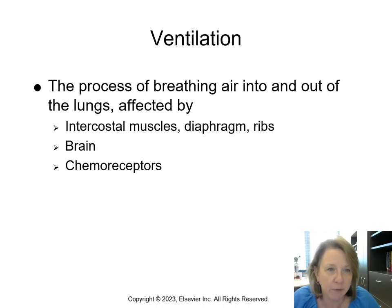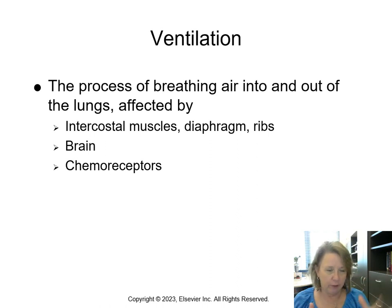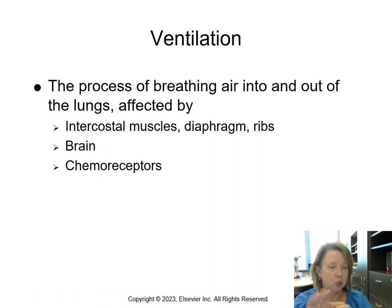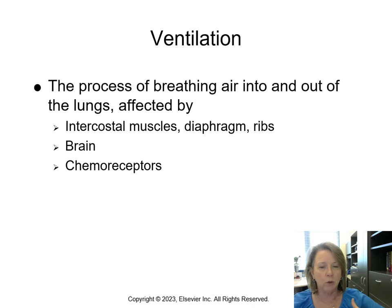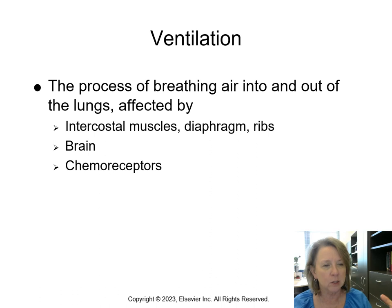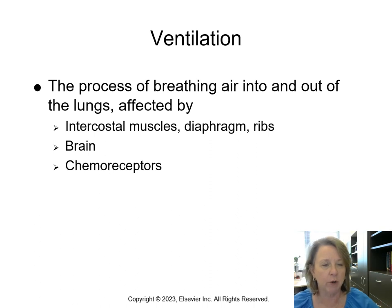We're still in the concept of infection, and we're going to talk about different things with the respiratory system, including pneumonia and influenza. I put this up for ventilation just to review: the process of breathing air into and out of the lungs is affected by our intercostal muscles, diaphragm, and ribs. When we take a breath in, our rib cage moves out, and as we exhale it moves back. If we have damage or trauma to anything, we can cause ventilation interruption — broken ribs, anything like that.